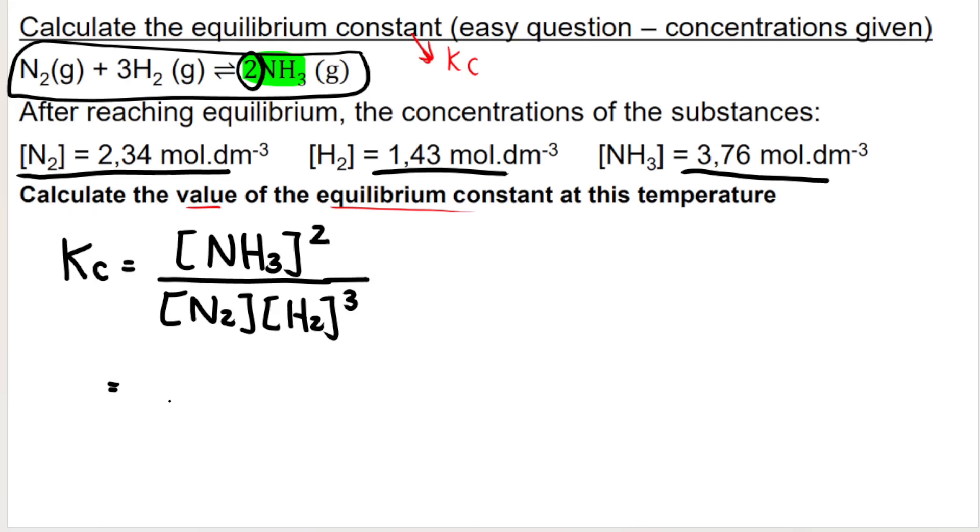Now what you do is you substitute values, concentration at equilibrium. So it's those values that get substituted in. So ammonia is 3.76. Remember, you have to square it.